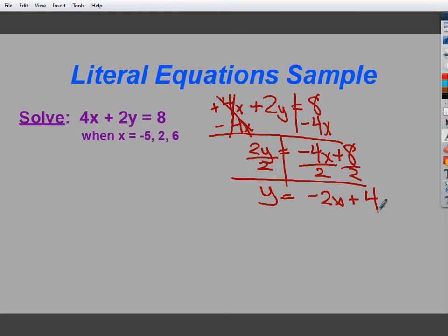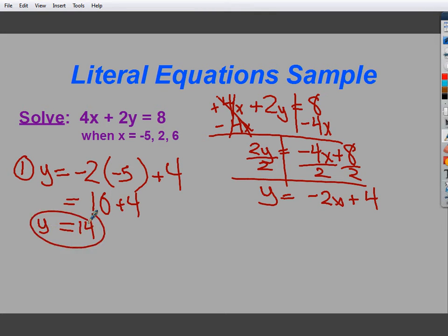So, negative 2x plus 4. All I have to do now is plug in my three values, and I've got my three answers. So, my first one, my y is equal to negative 2. I'm going to make a little parenthesis here and plug in negative 5. So, negative 2 times negative 5 is positive 10. So, in this case, y is equal to 14. That's the first one.